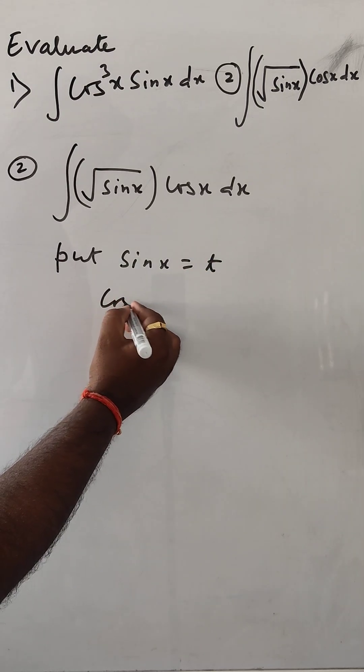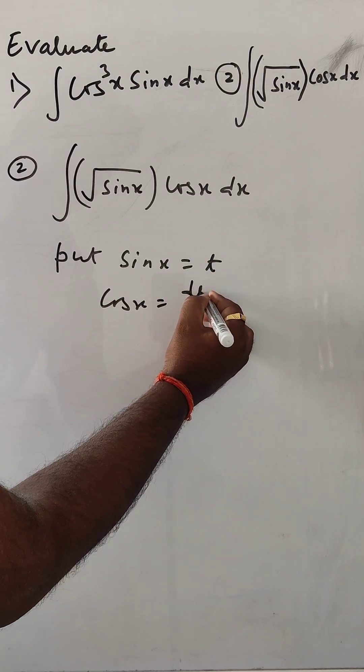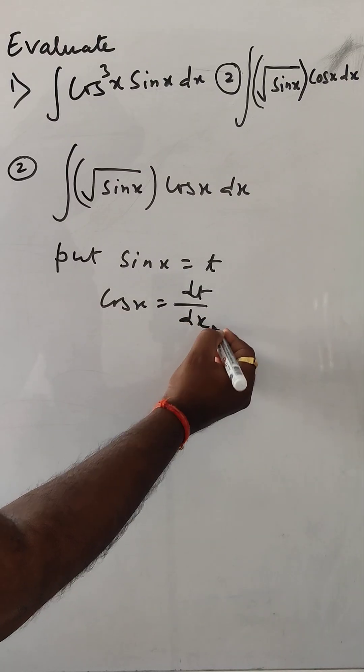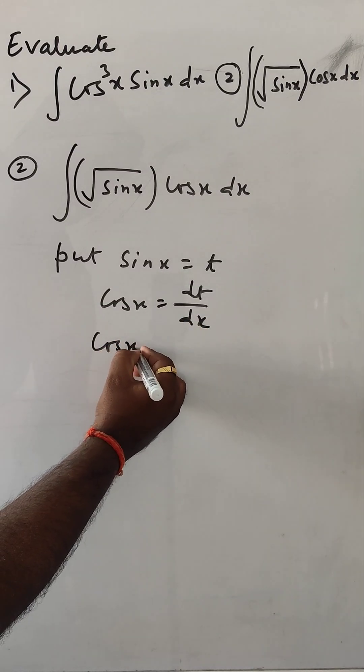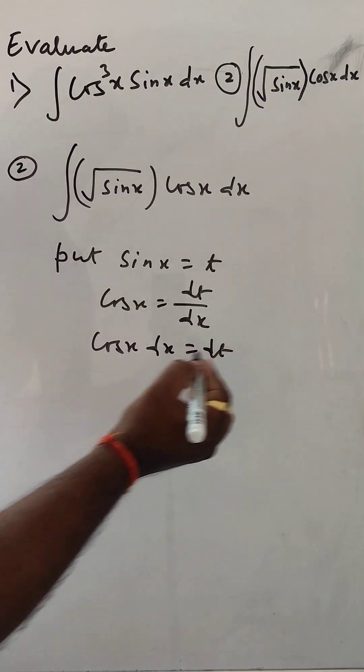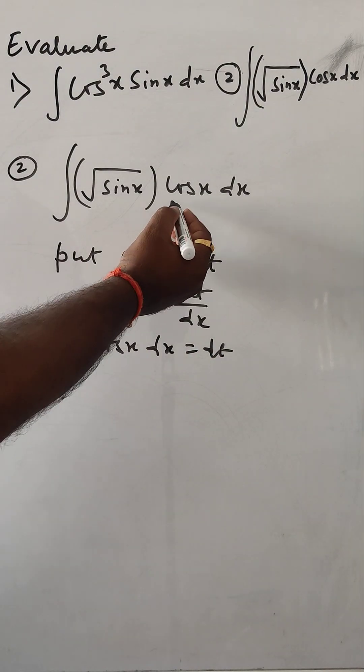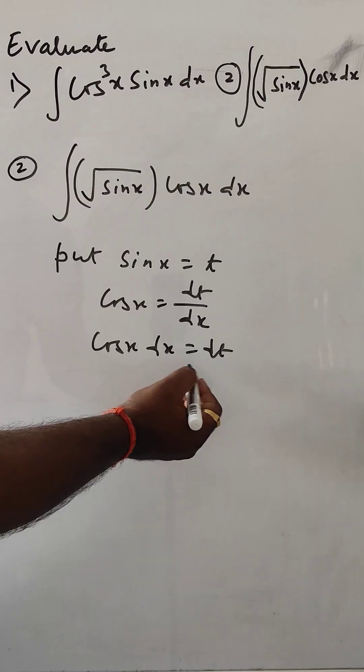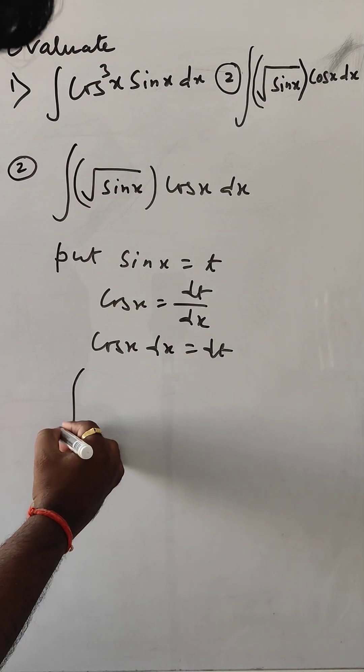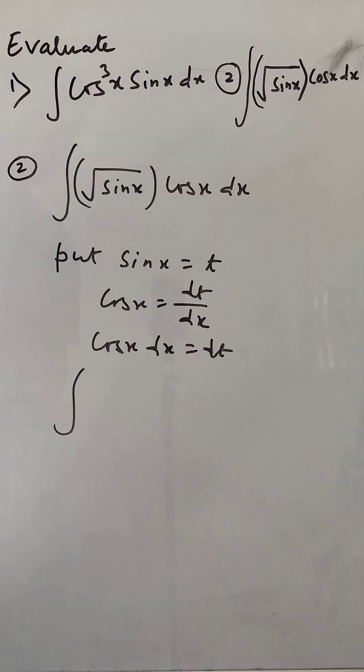So it is cos x equals dt/dx, meaning cos x dx equals dt. So now for cos x dx, put dt. And here, square root sin x.